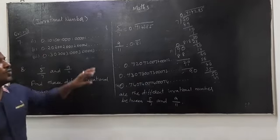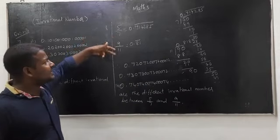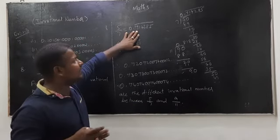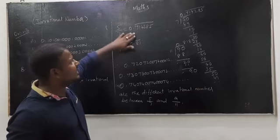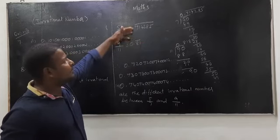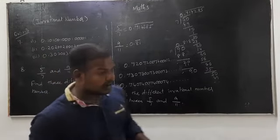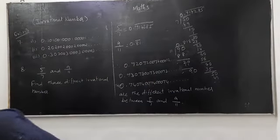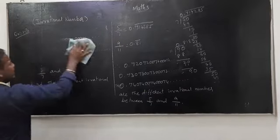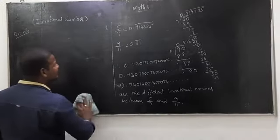So if you are given any fractions, you find the decimal value, and if you are asked for different irrational numbers, you can write many different irrational numbers between those two fractions. Now we will move to the 9th problem — it is a very easy one if you understand the concept of irrational numbers.